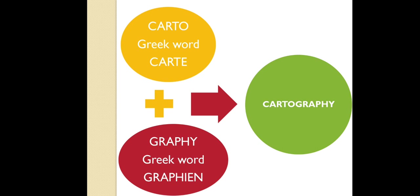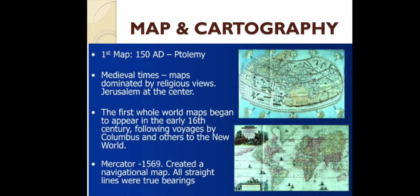Whereas 'graphe' is derived from the Greek word 'graphean' which means write or drawing. So the science of making or drawing a map is called cartography. It is said that the first map was made by Ptolemy in 150 AD.